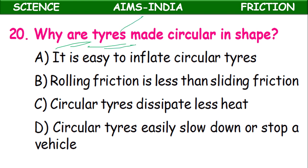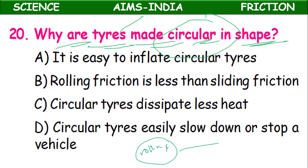Twentieth question: Why are tires made circular in shape? If tires are circular, they create rolling friction, which is smaller compared to other types of friction. Rolling friction is less than sliding friction, so that's why tires are made circular.